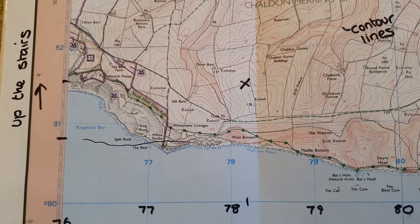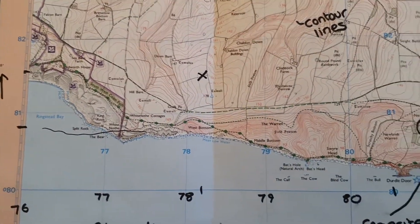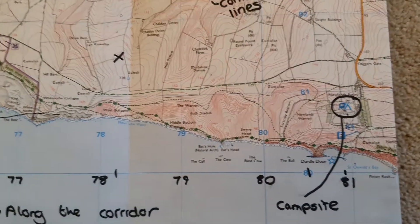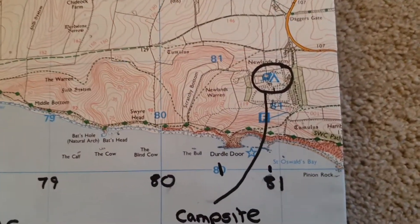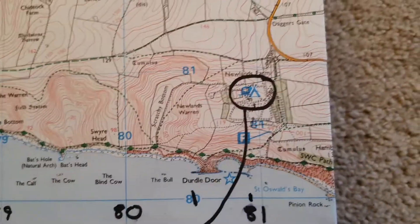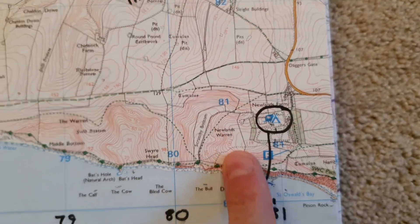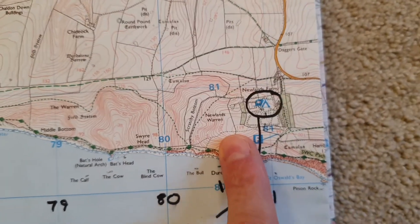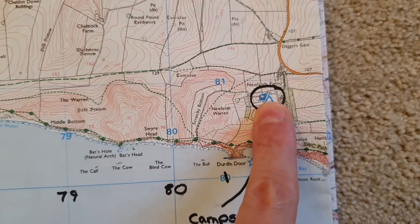Let's have a look at a six-figure grid reference, because that's a little bit more complicated but far more accurate. With a six-figure grid reference it doesn't just tell you where something is inside a box — it tells you whereabouts in the box it is.